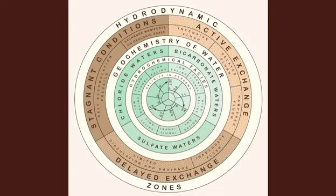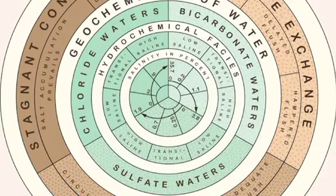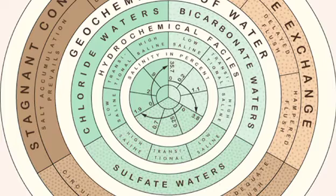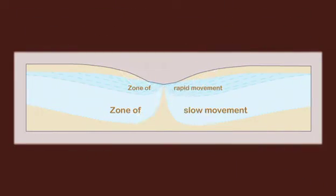Small hydrodynamic gradients lead to low velocities and small discharges, and consequently to long detention times. The increase in salinity concentration becomes apparent as the exchange rate changes from active to delayed, and eventually to stagnant conditions. Therefore, zones of smaller gradients and slower movement occur in deeper strata. The metamorphism of groundwater geochemistry is a function of salinity concentration and depth below the Earth's surface.